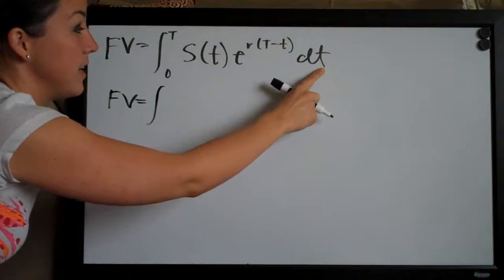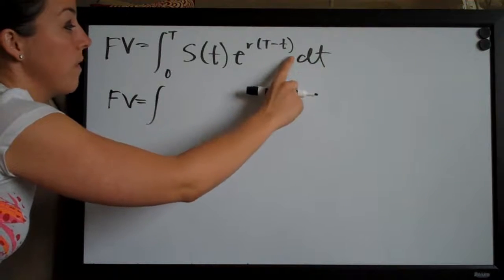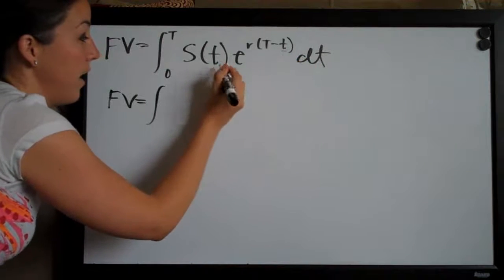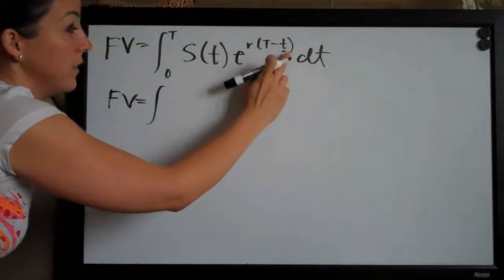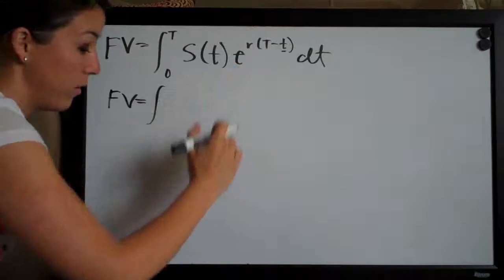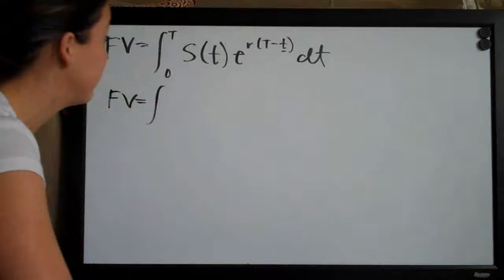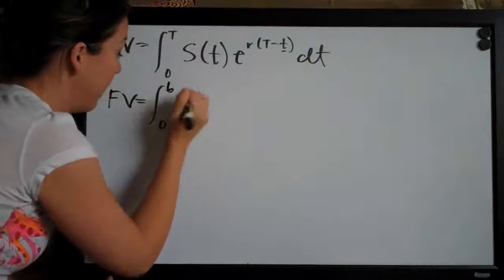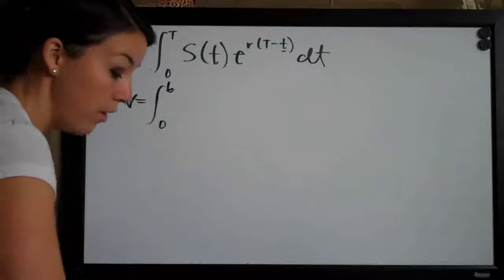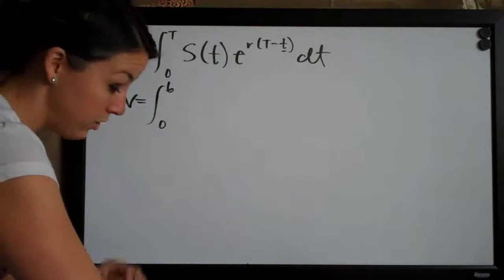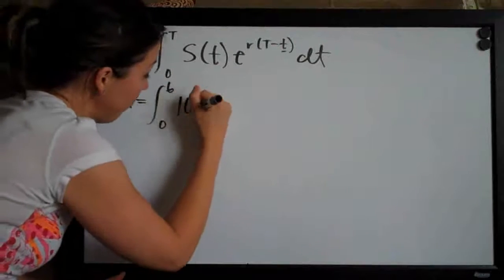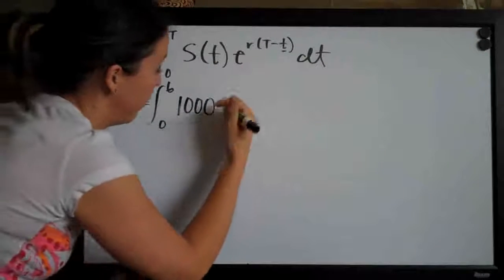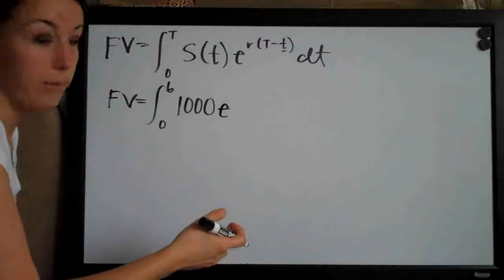Notice that we have dt and it's a lowercase t, so this integral is taken with respect to lowercase t. This lowercase t is the variable we leave in and don't touch — everything else we plug in for. We're looking for the population after six years, so we plug in six for capital T and evaluate on the range zero to six. We're adding fish at a rate of a thousand fish per year, so s(t) equals one thousand.